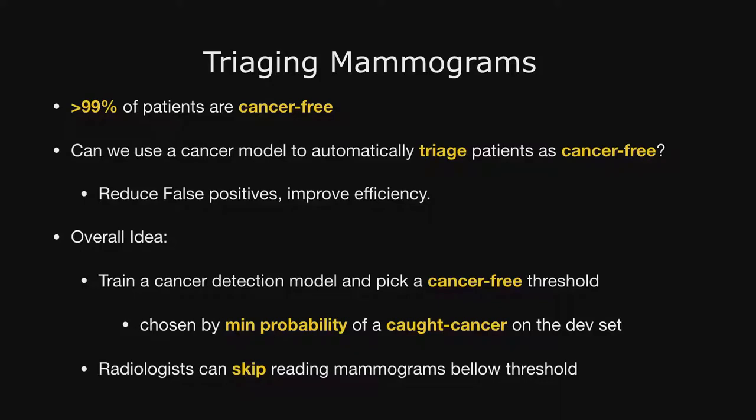The broad idea here is we're going to train a cancer detection model to find cancer as well as we can. Given that, we're going to try to say what's a threshold on a development set such that below the threshold, no one has cancer? And if we use that at test time, similarly in clinical implementation, can we actually do better by doing this kind of process?